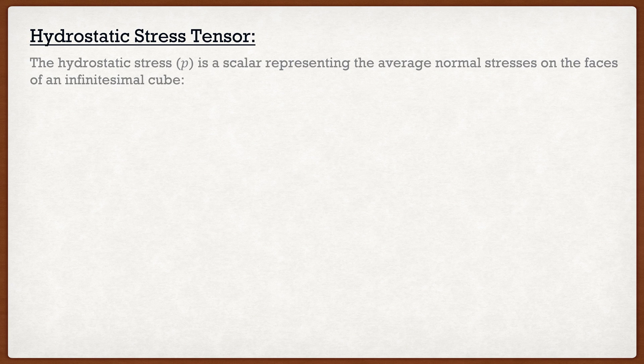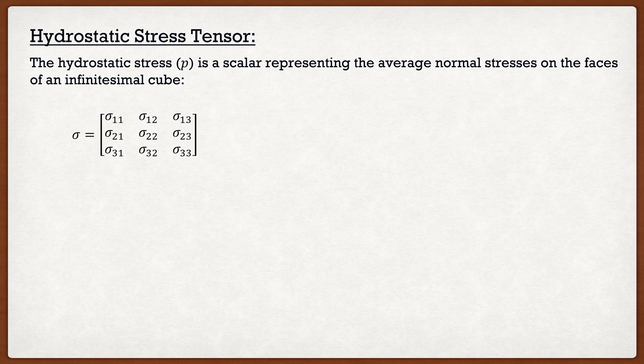The first one we're going to talk about is the hydrostatic stress tensor. The hydrostatic stress, denoted as a lowercase p, is a scalar representing the average normal stresses on the face of an infinitesimal cube. If I have a Cauchy stress matrix which is 3x3, I can find the hydrostatic stress by adding up the three diagonal components — sigma11, sigma22, and sigma33 — and then dividing by three.